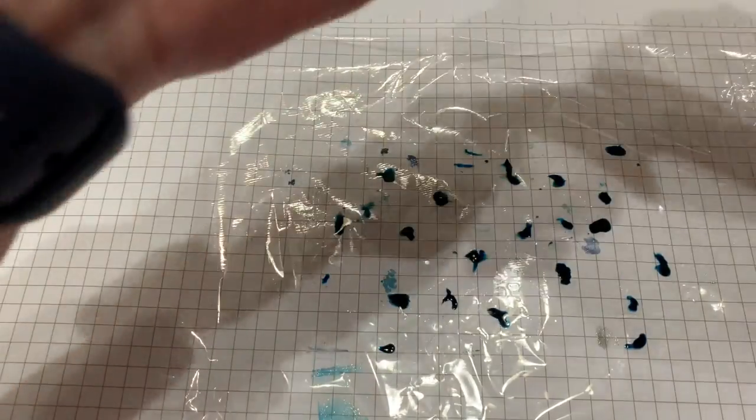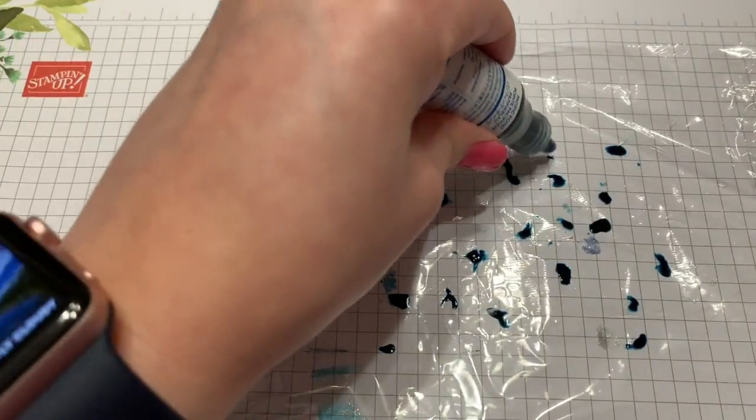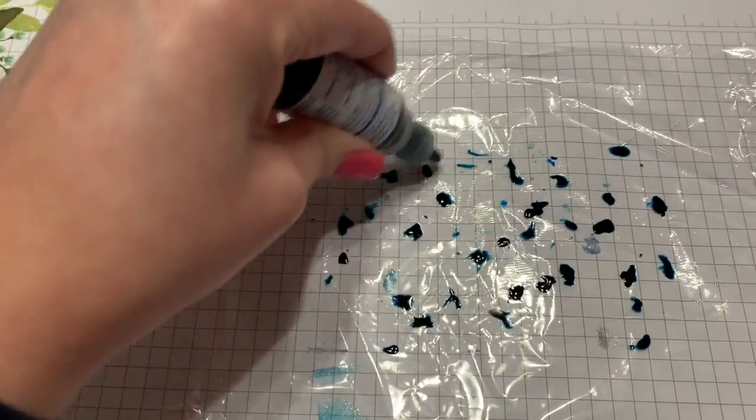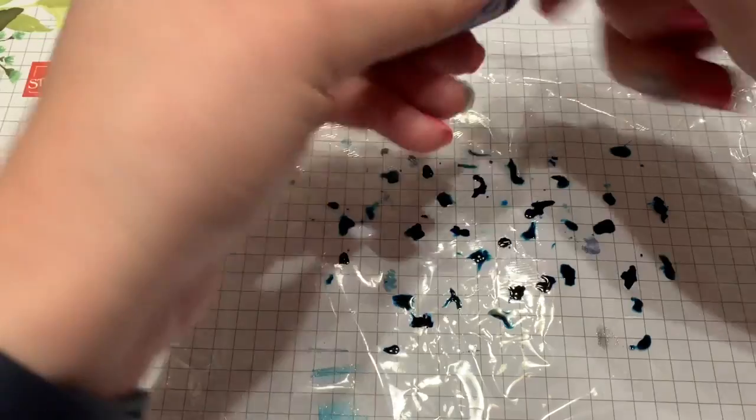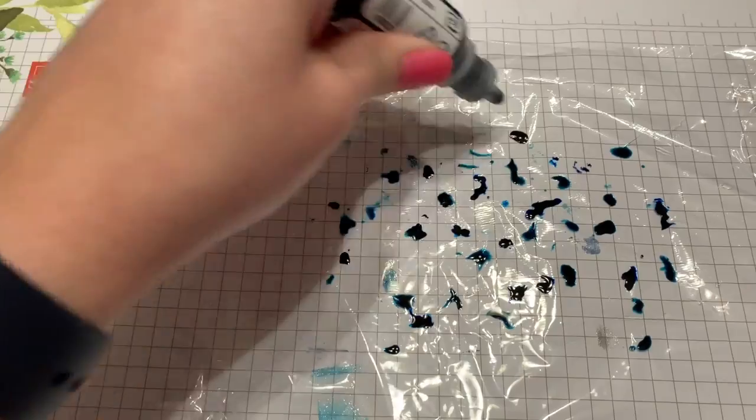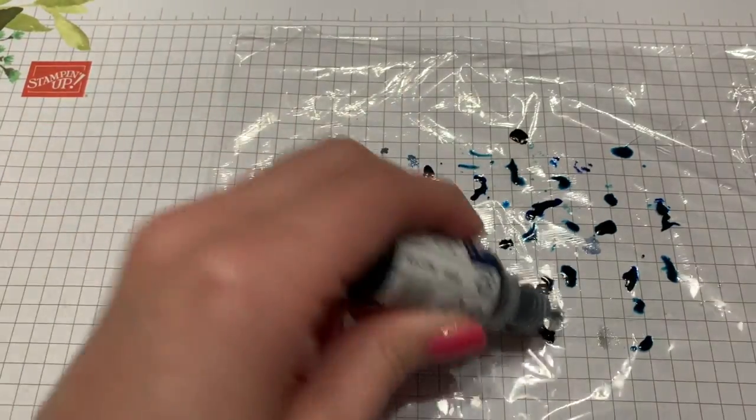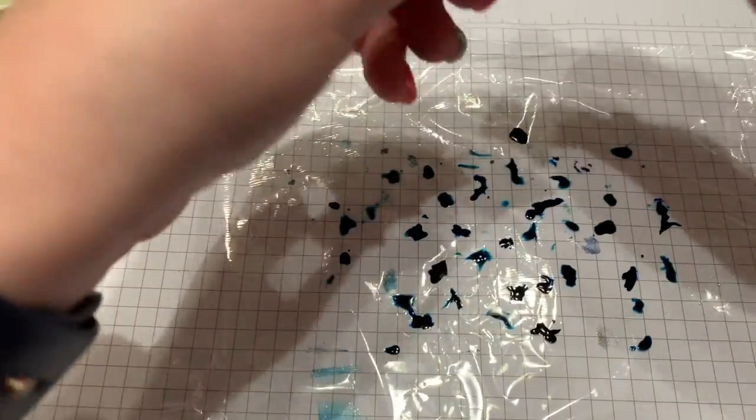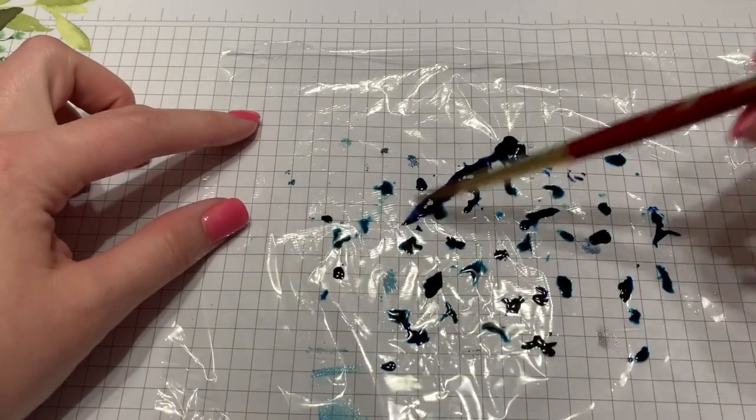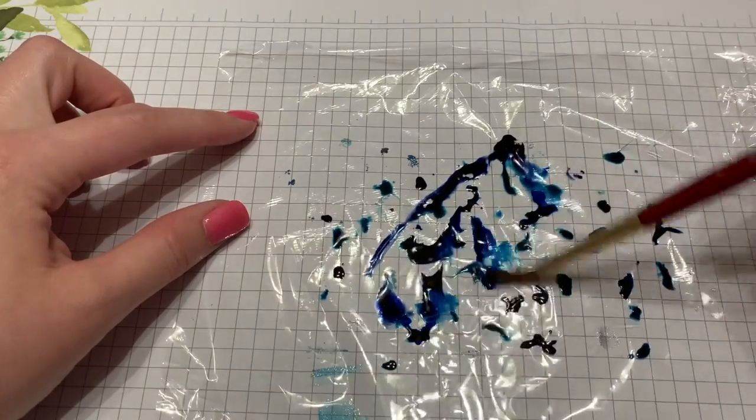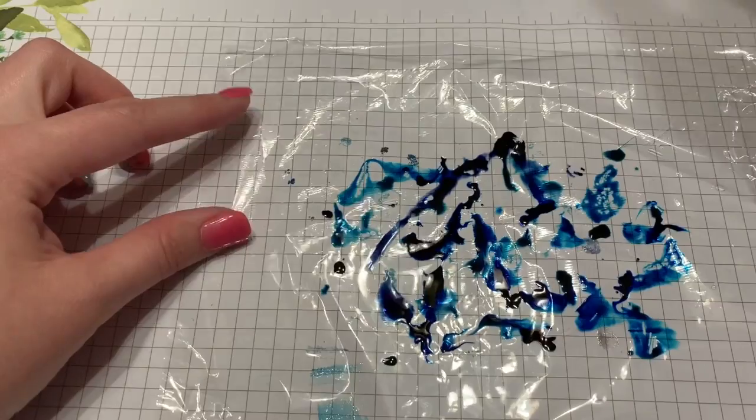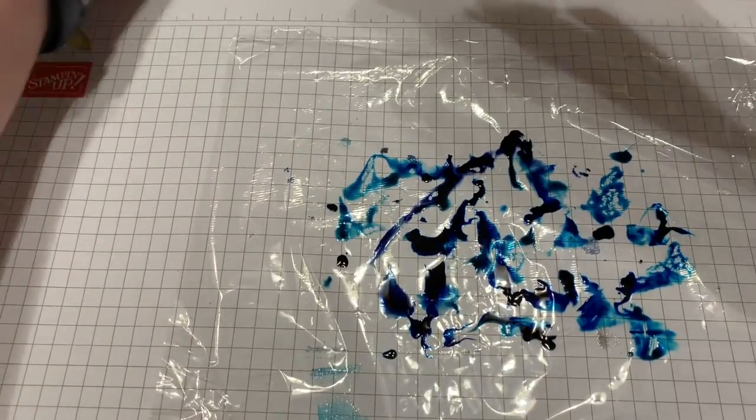Then we're going to do the Pacific Point, and Night of Navy. Oops, that was a big dot. If you do what I just did where you got a real big dot, you just take your paintbrush and smear it a little bit and you'll move it on your saran wrap a little. That way it's not all globbed up in one spot.